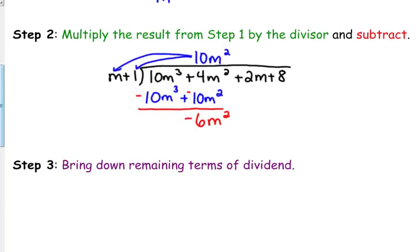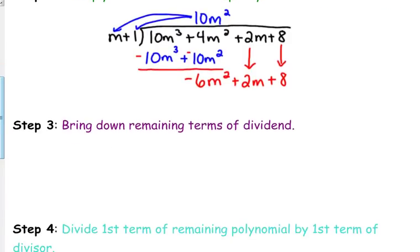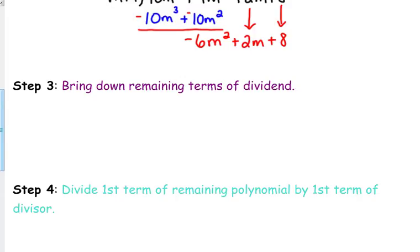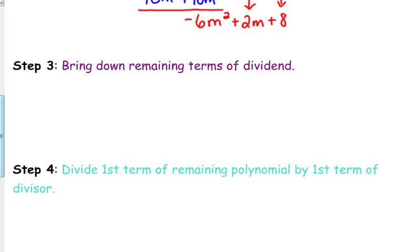Step 3 says bring down the remaining terms, so the 2m and the 8 come down to join the negative 6m squared. Step 4 says divide the first term of the remaining polynomial by the first term of the divisor. We take negative 6m squared and divide it by m, so we get negative 6m. Once you've multiplied and subtracted, you divide what you've got left by your divisor.